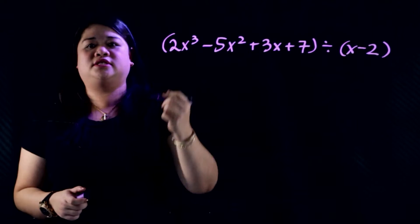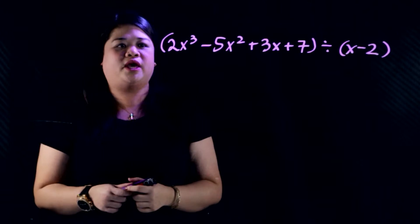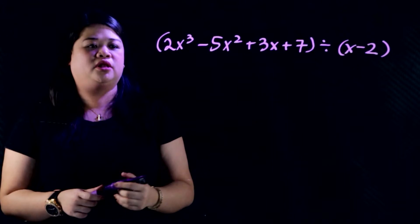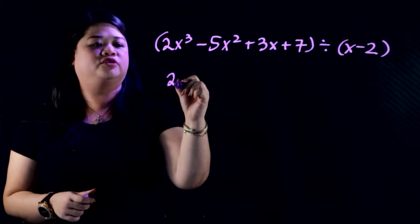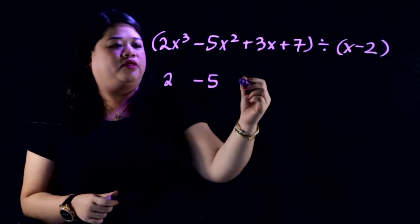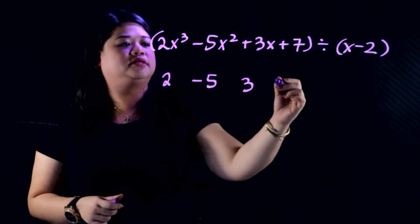Let's see how this is different from the first example that we had. So same thing, you're going to be getting all the numerical values of this polynomial. So we'll have 2, negative 5 for this one, 3, and 7.